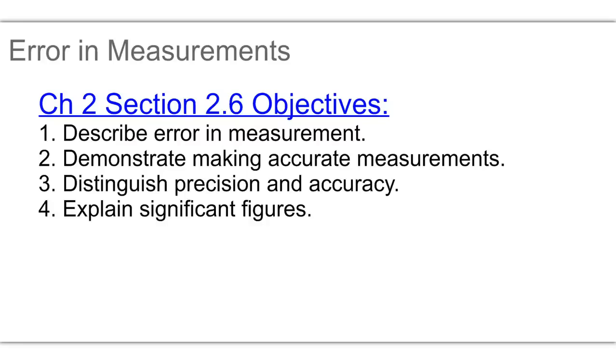Chapter 2, Section 2.6, we're going to describe error in measurement. We're going to make accurate measurements, distinguish precision and accuracy, and explain significant figures.